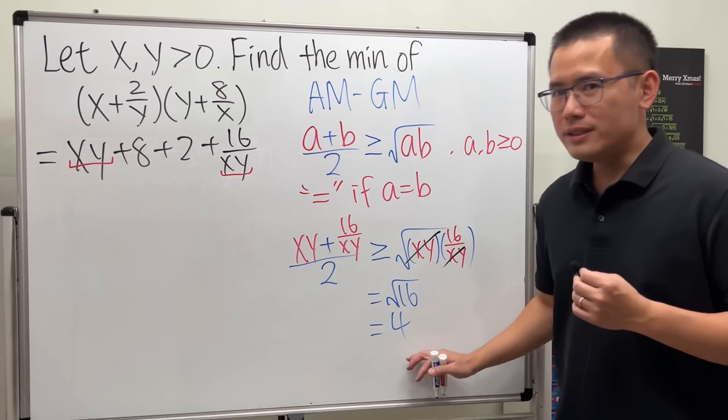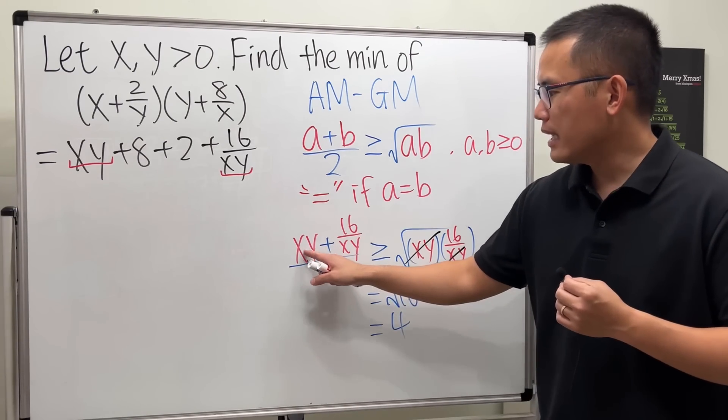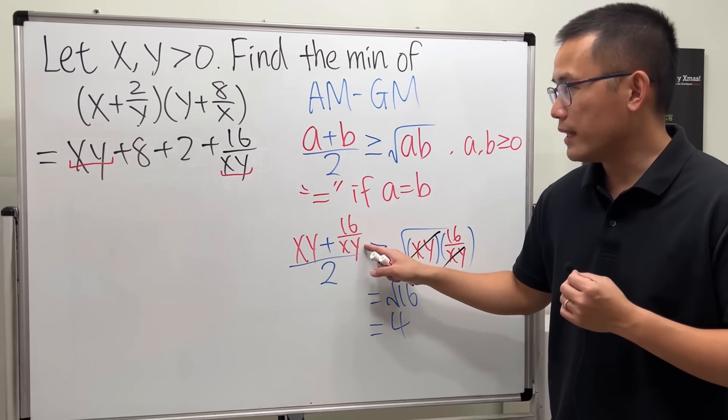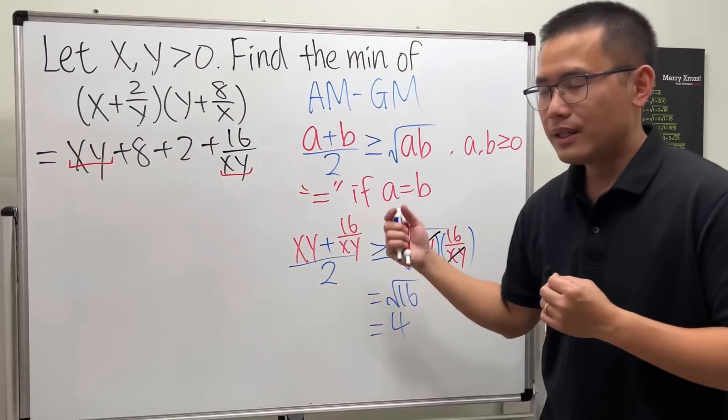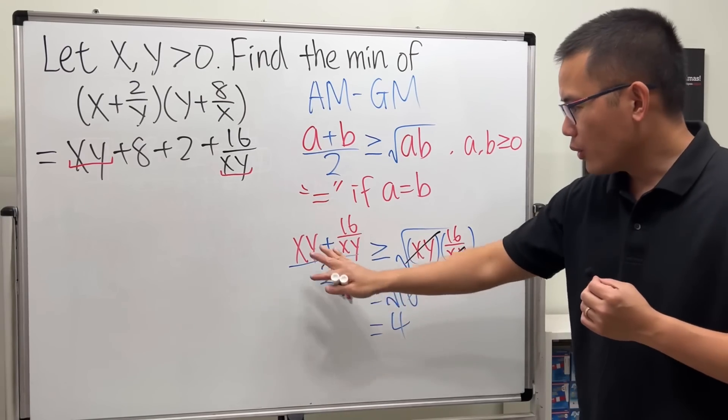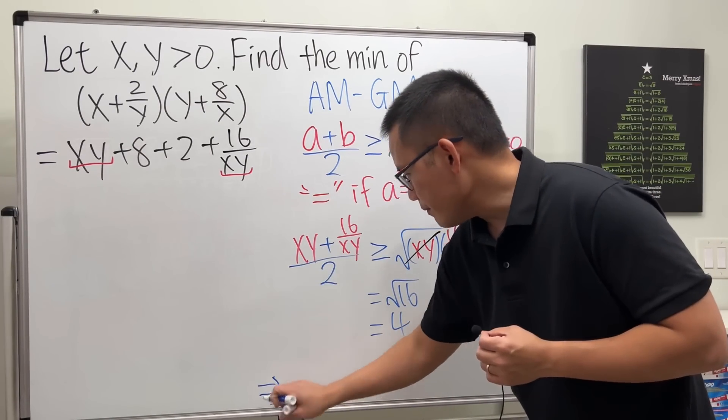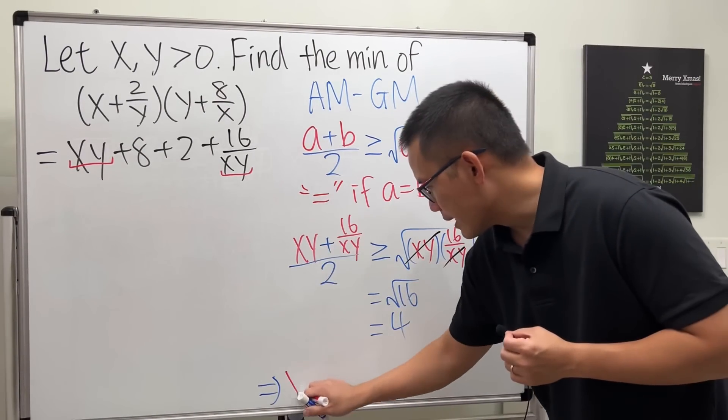Now, 4 is not the number we are going to use, because we care about xy plus 16 over xy. Yeah, this is over 2.